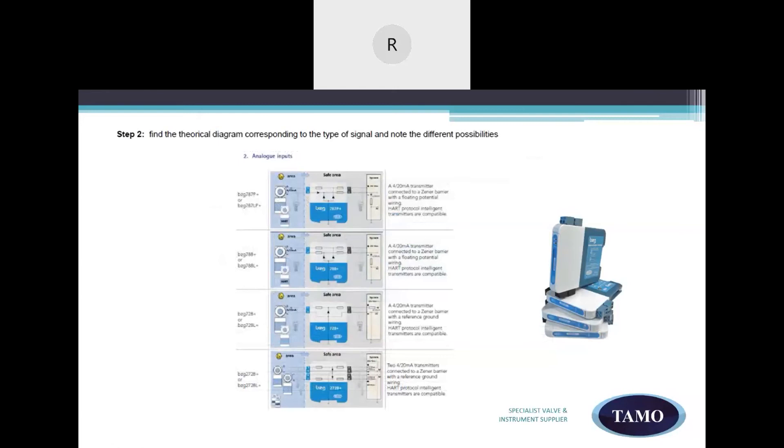Step two is to find the reference diagram. So you'll find the reference diagram corresponding to the type of signal. Also note all the various possibilities that are available.